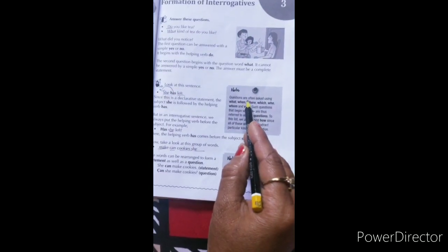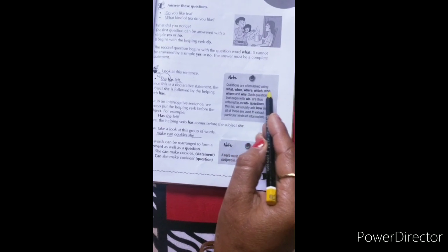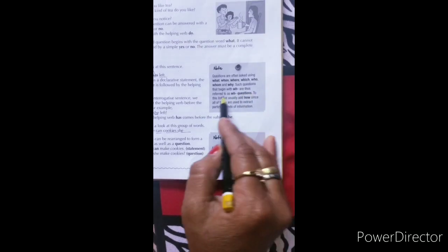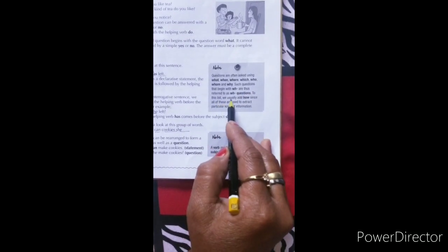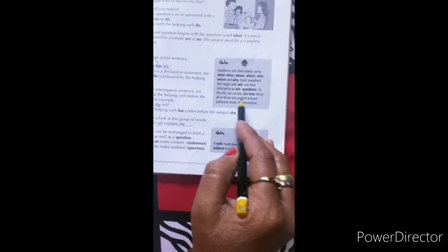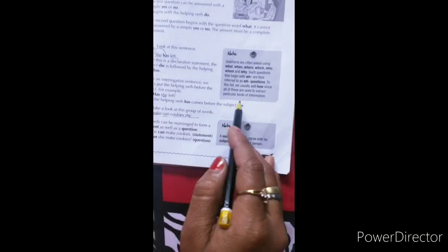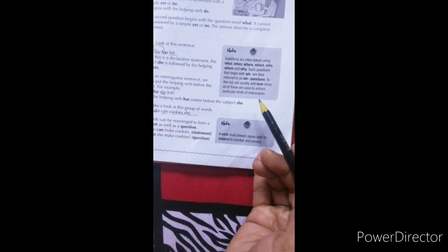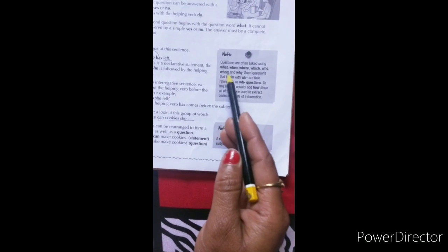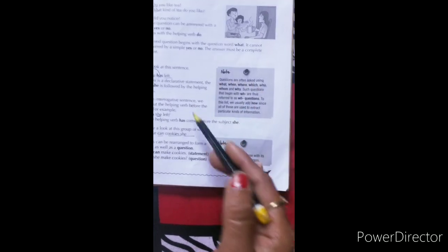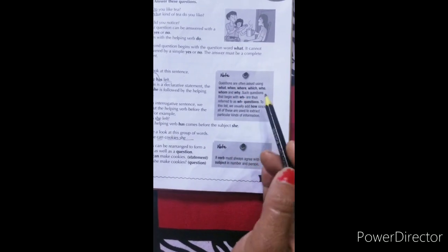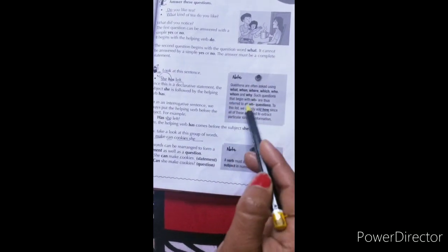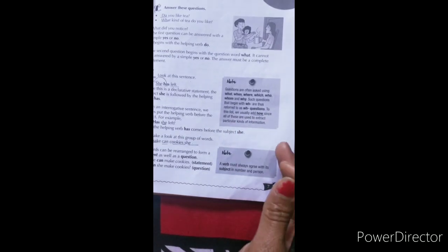Note: Questions are often asked using what, when, where, which, who, whom, and why. Such questions that begin with WH are thus referred to as WH questions. To this list we usually add 'how', since all of these are used to extract particular kinds of information. Aap jante ho WH questions kaunse hote hain — jaise what, when, where, which, who, whom — ye saare WH se start hote hain isliye inhe WH questions kaha jaata hai. Is list mein hum 'how' ko bhi add karte hain.